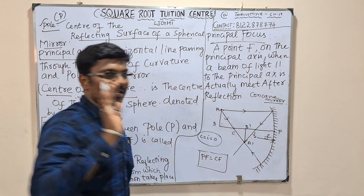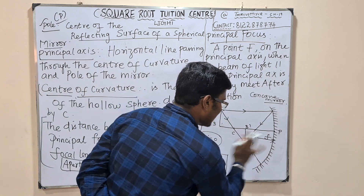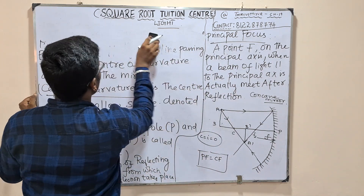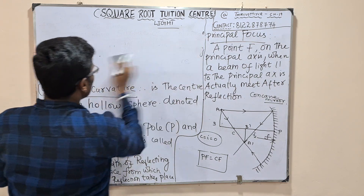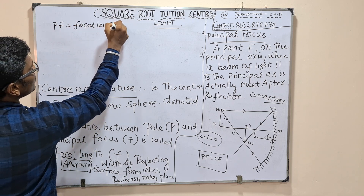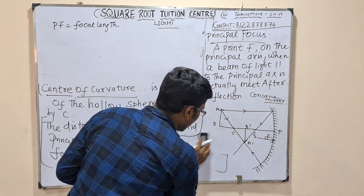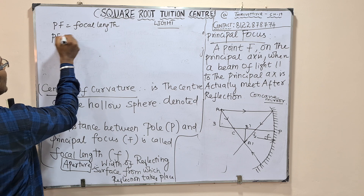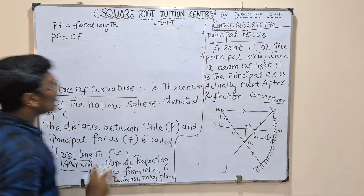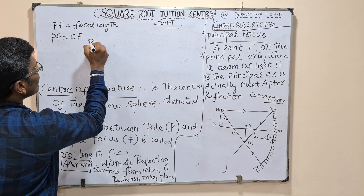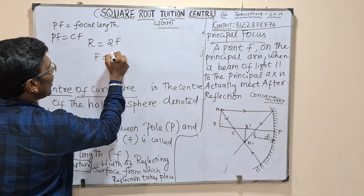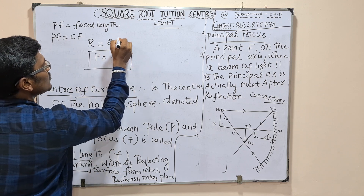If we call the principal focus small letter f, we call the focal length small f. Capital P to F is the focal length. P2F equals C2F, and also R equals 2F.